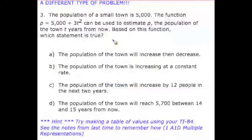All right, so we've got the problem here. It says the population of a small town is 5,000. The function P equals 5,000 plus 3t squared can be used to estimate P, the population of the town, T years from now based on this function, which statement is true.